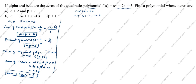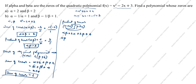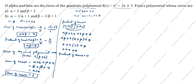Next, we will find the product of zeros: (alpha + 2)(beta + 2). Multiplying out: alpha·beta + 2·alpha + 2·beta + 4 = alpha·beta + 2(alpha + beta) + 4. Substituting alpha·beta = 3 and alpha + beta = 2: 3 + 2(2) + 4 = 3 + 4 + 4 = 11. Product of zeros equals 11.